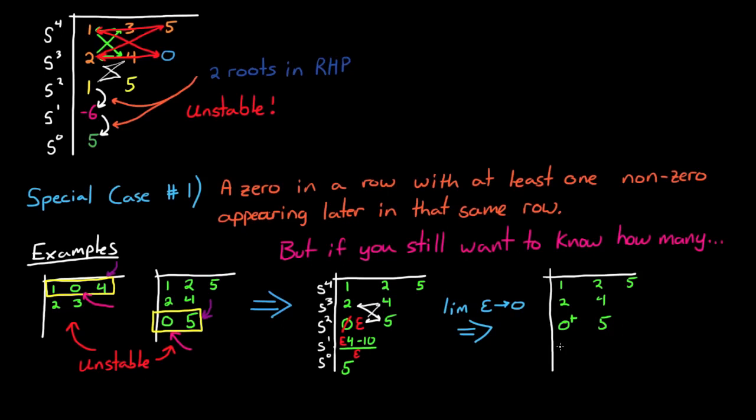Then in the fourth row, this can be rewritten as 4 minus 10 over epsilon. And so as epsilon goes to 0, this tends to go to negative infinity. And now in this system you can see that we still have two unstable roots, or two roots in the right half plane.